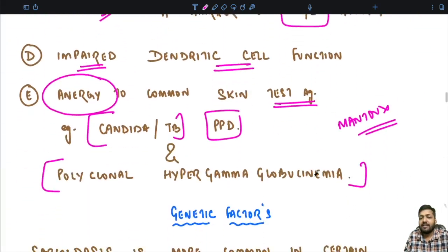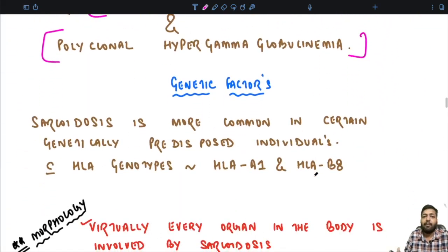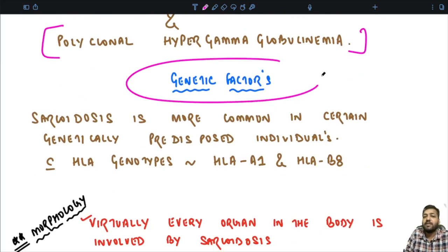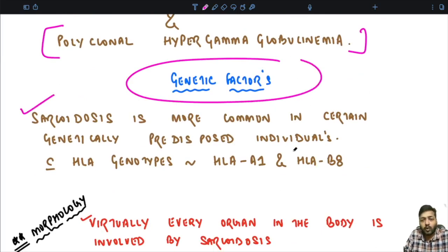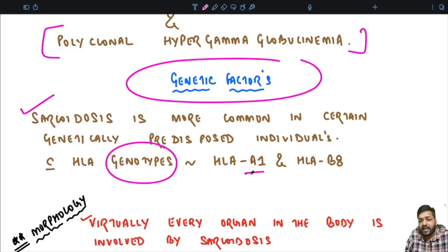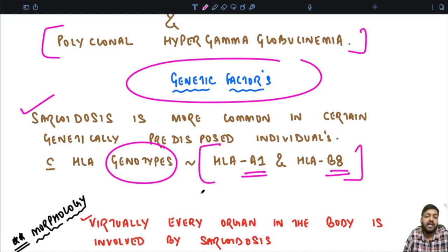Sarcoidosis also occurs in certain genetically predisposed individuals who have HLA genotypes, mainly HLA-A1 and HLA-B8. Individuals with such HLA genotypes are predisposed to developing sarcoidosis.